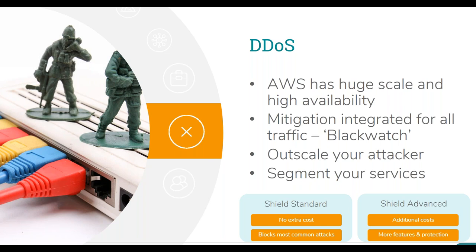AWS also has a system called BlackWatch — their proprietary DDoS mitigation tooling. It's always on, inspects all traffic, and there's no external routing — it's fully integrated into AWS with no additional latency. It tries to identify suspicious traffic and prioritize what is legitimate, looking for things like abnormal sources, abnormal request rates, and odd ports and protocols. It tries not to drop all traffic but to de-prioritize it so that false positives don't hit your real customers too hard.